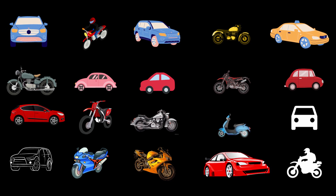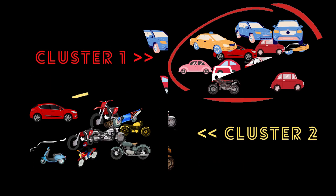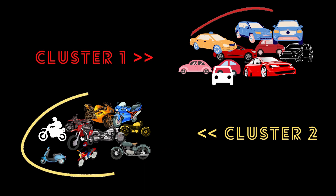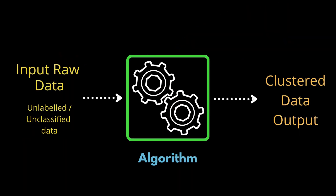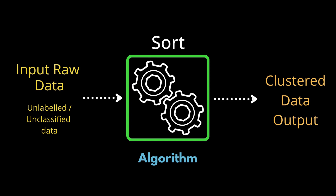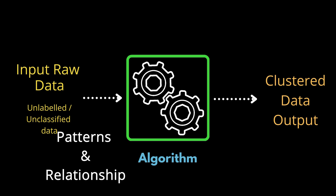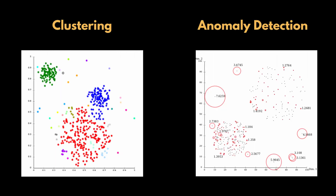In unsupervised learning, consider a dataset of images of cars and bikes, but this time the images are not labeled. The algorithm takes in these images, identifies features, and groups them into separate clusters based on those features. This method of clustering unlabeled data using features extracted by the model is known as unsupervised learning. The algorithm extracts meaningful features to label, sort, and classify data in real-time without human intervention, identifying patterns and relationships that would normally be missed by humans. Unsupervised learning is mainly used for clustering and anomaly detection — anomaly detection identifies unusual patterns and is used for intrusion detection, health monitoring, and fraud detection.